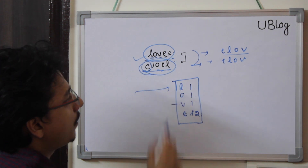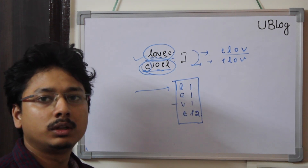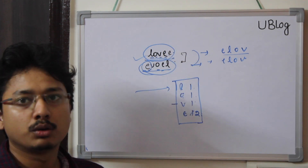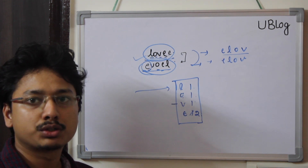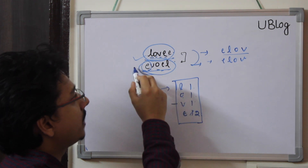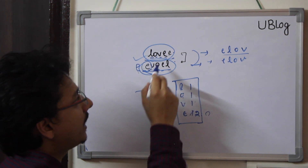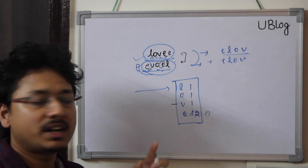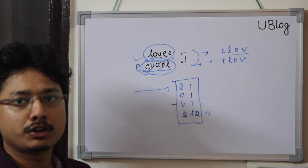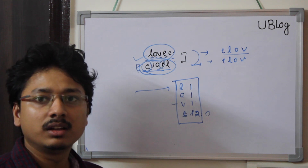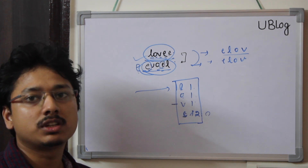The second failure case is when you finish iterating the second string and some character's count in the hash map is still non-zero — meaning it appeared more times in the first string. A third failure case: if a character's count is already 0 when you try to decrement it, that means there is one extra occurrence in the second string. In that case, return false — they are not permutations of each other.